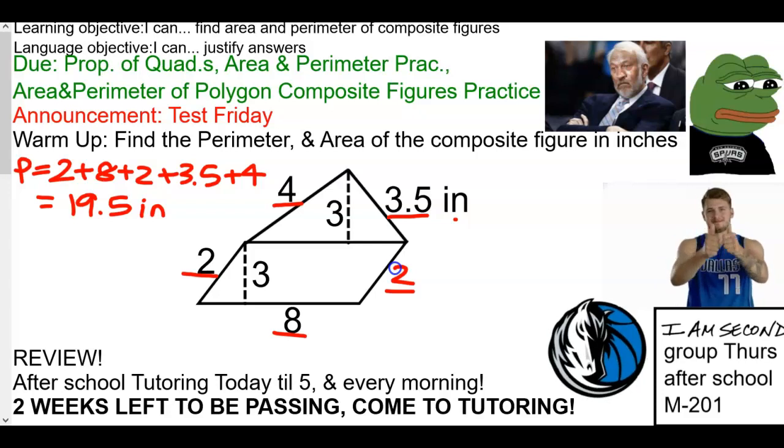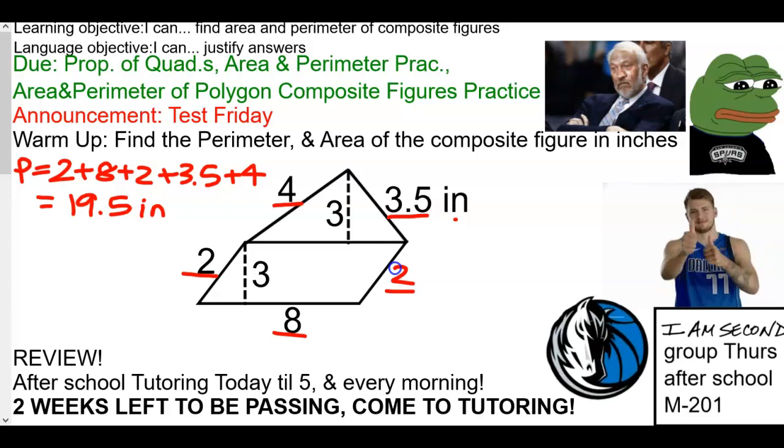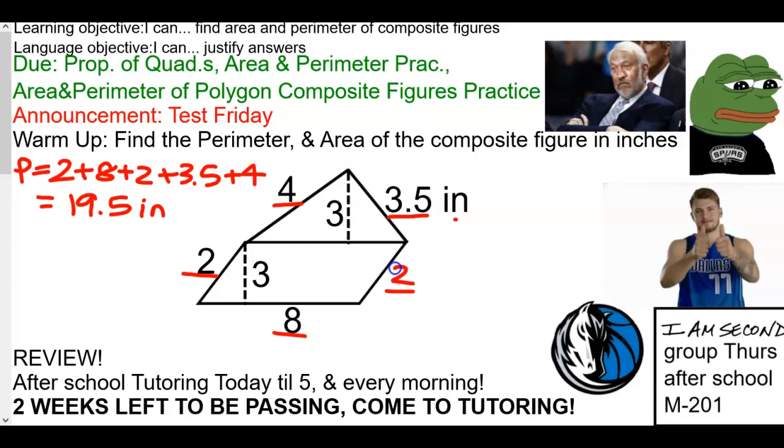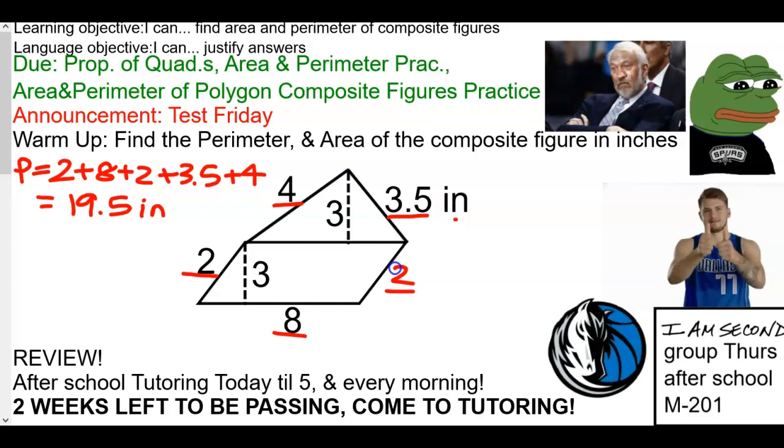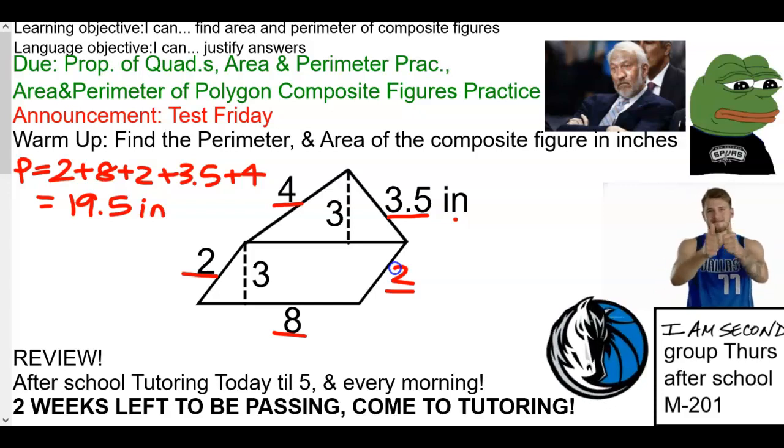Now, area, what am I going to have to do? Find each shape. So I'm going to find the area of the parallelogram, and I'm going to find the area of the triangle. Does everyone know, for composite, add the two areas. First, find each, and then add them up.